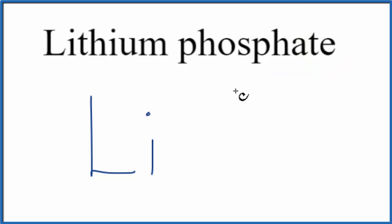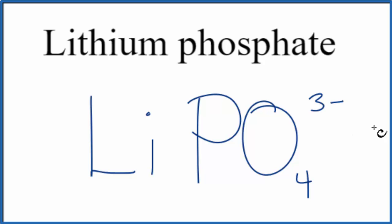So you either have memorized that the phosphate ion is PO4, 3-, or, if you're allowed, you look it up on a table of polyatomic ions.